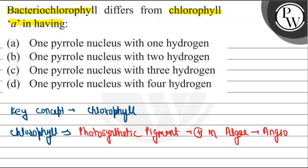It's also present in BGA, that is blue-green algae, and also in diatoms. This chlorophyll is responsible for oxygenic photosynthesis - oxygenic means O2 evolution. It is responsible for oxygenic photosynthesis.